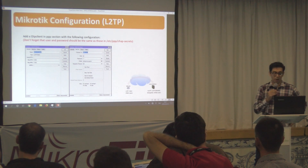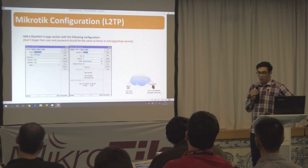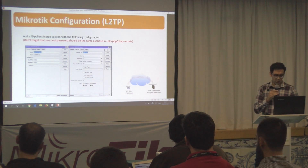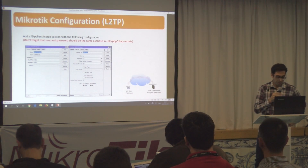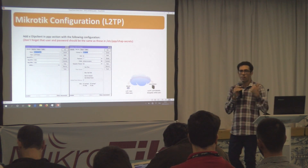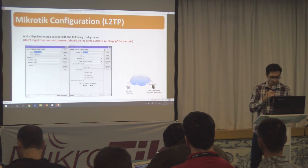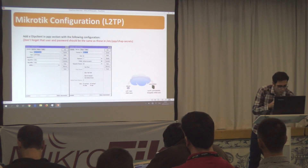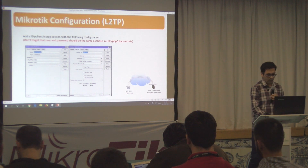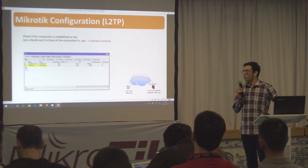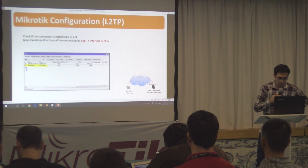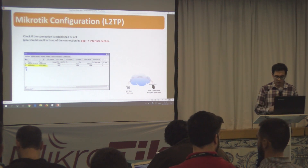For the configuration on Mikrotik, you need to first run the L2TP client. There are no special parameters to assign — just the username and password, which should be the same as you set on XL2TP — and the IP address of the Unix server to connect to. After pressing OK, if everything goes well, you can see in the PPP interface section that the connection is up and running.